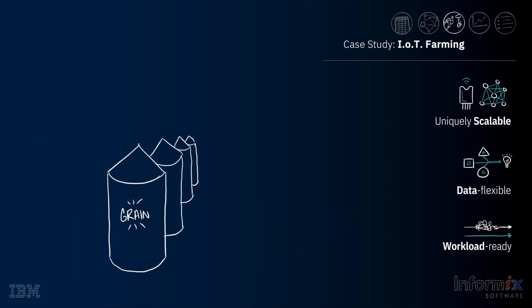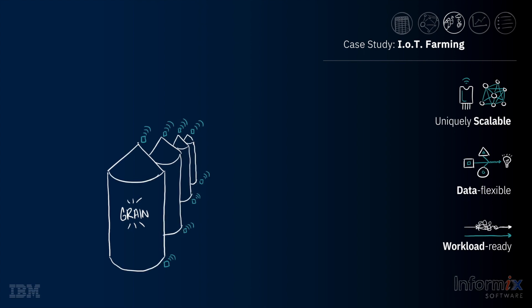As an example of how Informix can solve a seemingly simple yet complex data problem, suppose you manage a series of grain silos. The grain in these silos must be kept within certain ranges of humidity, temperature, and other metrics to prevent spoilage. To monitor these environmental conditions, probes and sensors are built into the silos. In addition, weather-related sensors are deployed to monitor environmental changes which will affect the grain in the silos.